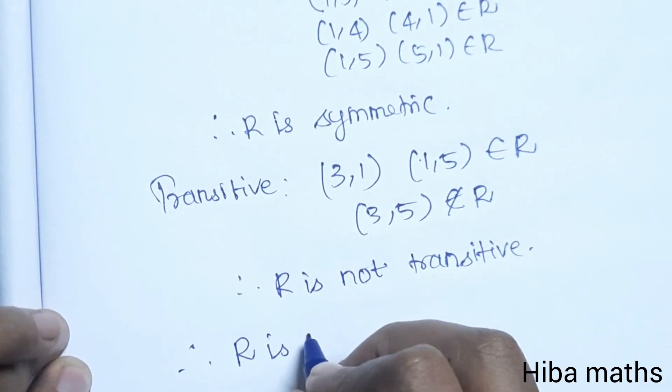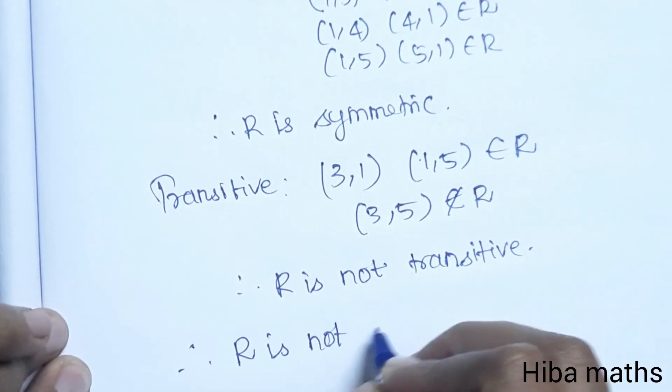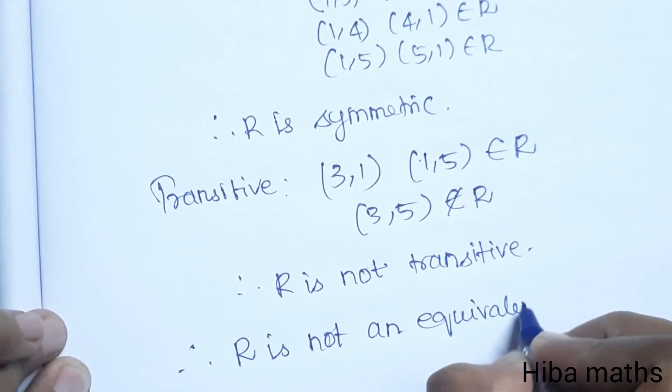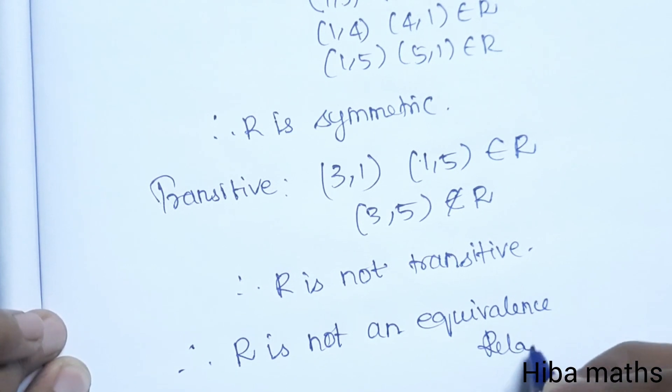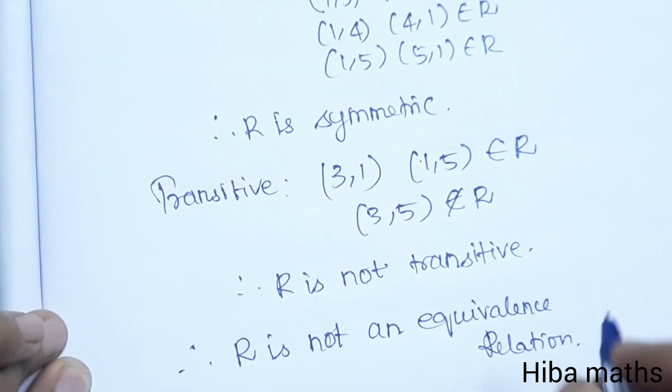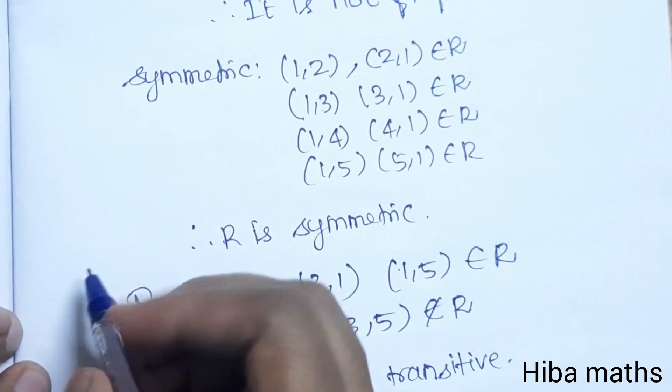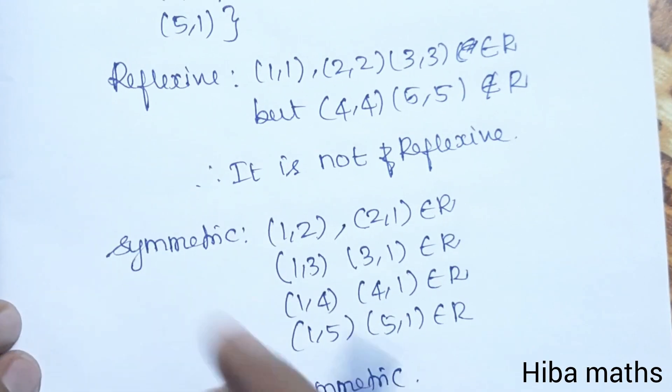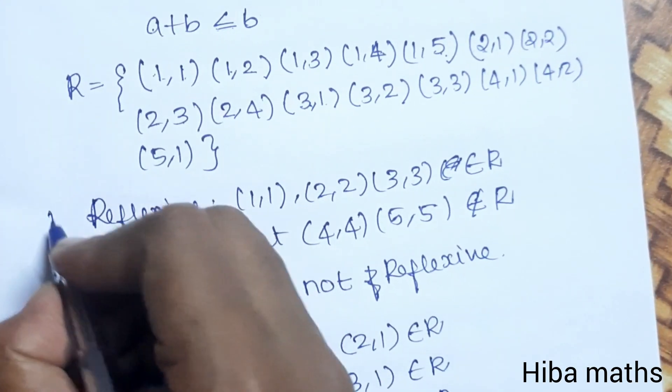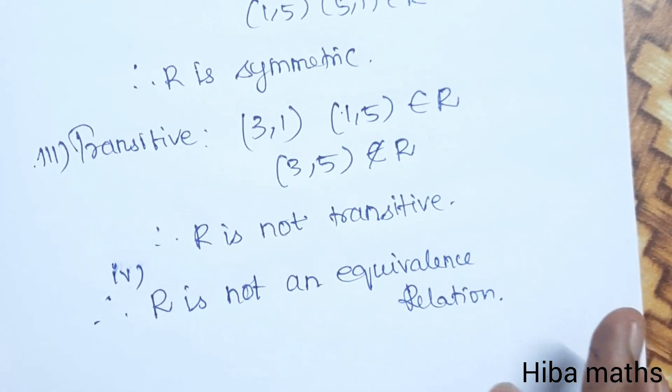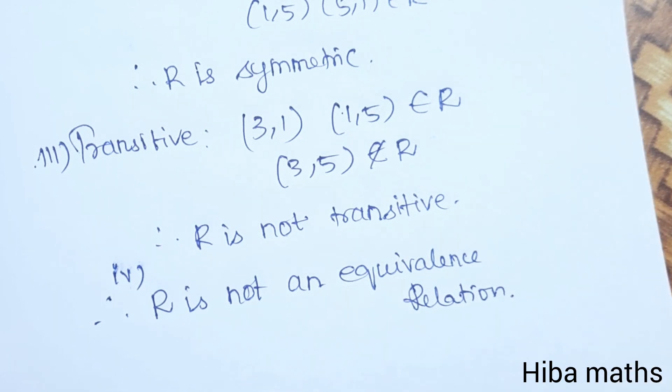Since R is not reflexive and not transitive, R is not an equivalence relation. The answer is that (3,5) is not an element of R. Thank you for watching.